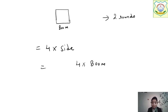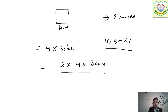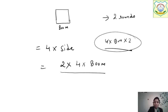That gives us the perimeter. Now he has taken 2 rounds of this field, so we multiply by 2. So the answer is 4 × 800 × 2. If this option is there in the question, that is the correct answer — and you can see that option B is correct.